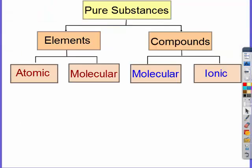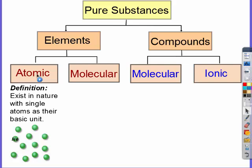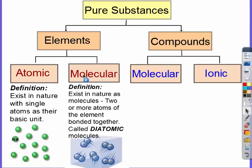Some types of pure substances are elements and compounds. If it's an element, there's two types of elements. We have atomic elements, which exist in nature as single atoms. Notice here's neon and it's all the same type and it's only one atom. We have molecular elements, which exist in nature as molecules. Two or more of the atoms of an element bonded together. These are called diatomic molecules and it's the same atom. So in order for it to be an element, it has to have the same type of atoms.